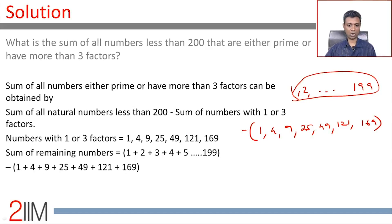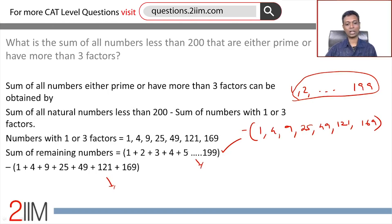So we're effectively looking at 1 plus 2 plus 3 all the way to 199. From that, we're subtracting 1 plus 4 plus 9 plus 25. Do this manually. For this, we know the formula. From this, subtract this. We've got the answer.